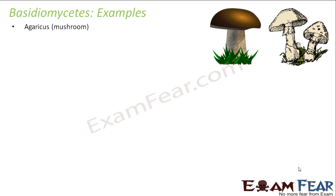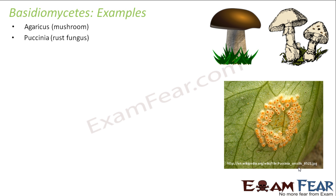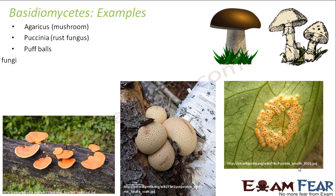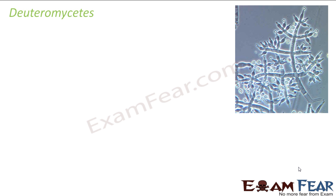Some examples of Basidiomycetes include mushroom, scientifically known as Agaricus; Puccinia, the rust fungus, which is seen on the leaves of plants as yellow patches; puffballs; and bracket fungi, which is generally seen on wooden logs. These are some of the examples of Basidiomycetes.